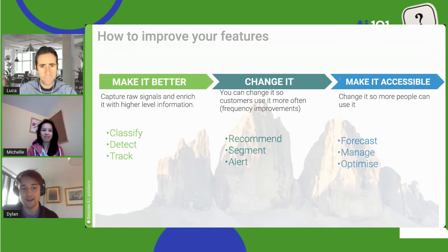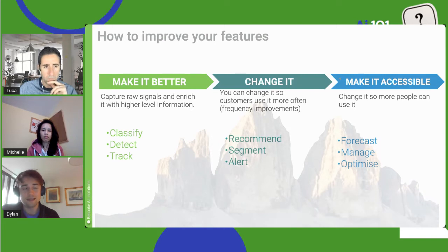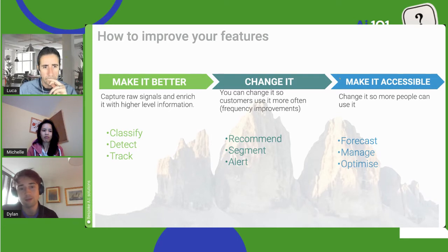The second approach is to change it — improvements that get customers to use the feature more often. For example, adding more items into an activity feed or more options on a search tool could mean they start using it daily instead of weekly. This is worth considering since it can have very important implications for your business. For instance, if your business relies on new videos being uploaded to your platform, improving the upload feature to be easier and faster means you get more videos.